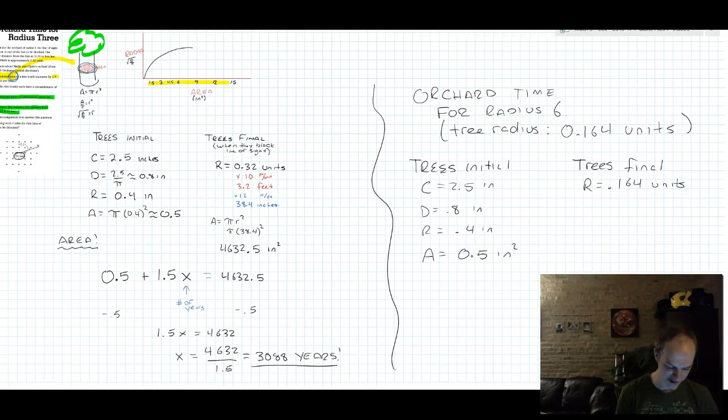For the first step, I've just copied my chart about the initial trees from this segment over here because nothing has changed about the initial trees. They still start with a circumference of 2.5 inches, which means they have an initial starting area of 0.5 square inches.